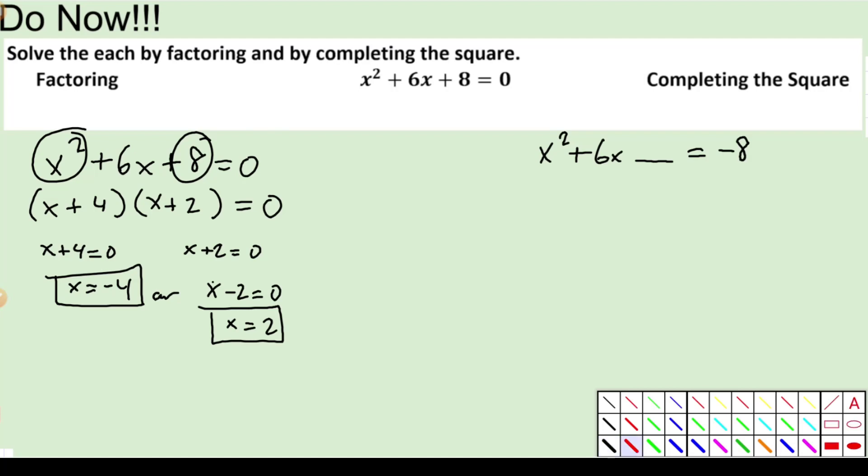Well, remember we take b, we divide it by 2. So we'll take b divided by 2 and we're going to square that. So that'll be 6 divided by 2 squared, which is 3, which is 9. So I'm going to add a 9 to both sides of my equation. So I'll add a 9 there.